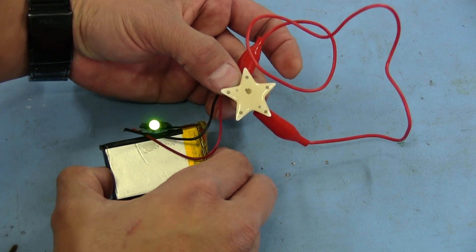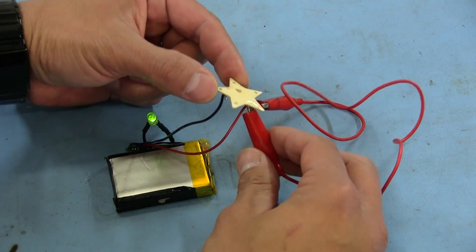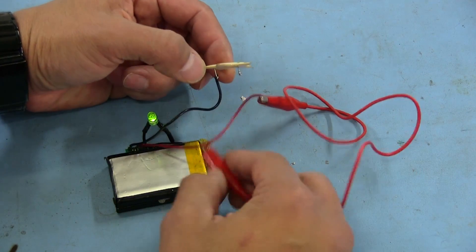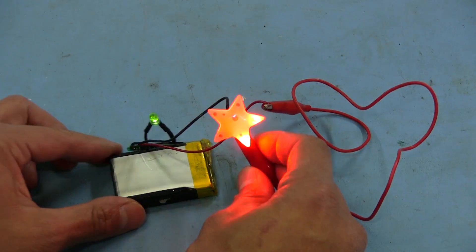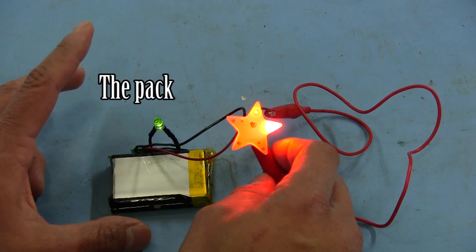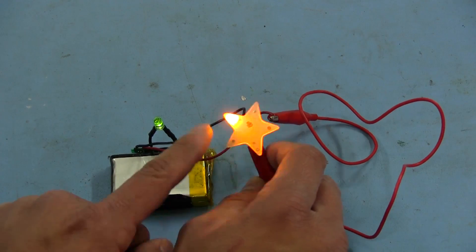But if we were to remove one of the leads from this battery off these lights, that'll allow the circuit to reset. And once we hook it back up, it starts working again.